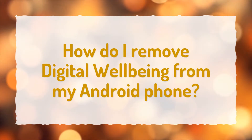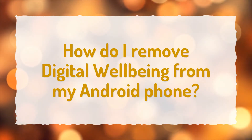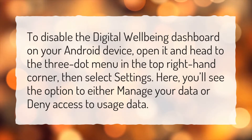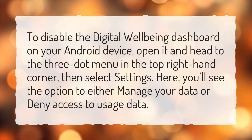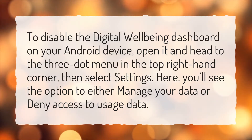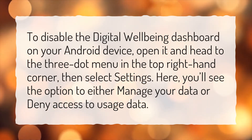How do I remove digital well-being from my Android phone? To disable the digital well-being dashboard on your Android device, open it and head to the three-dot menu in the top right-hand corner, then select Settings. Here, you'll see the option to either manage your data or deny access to usage data.